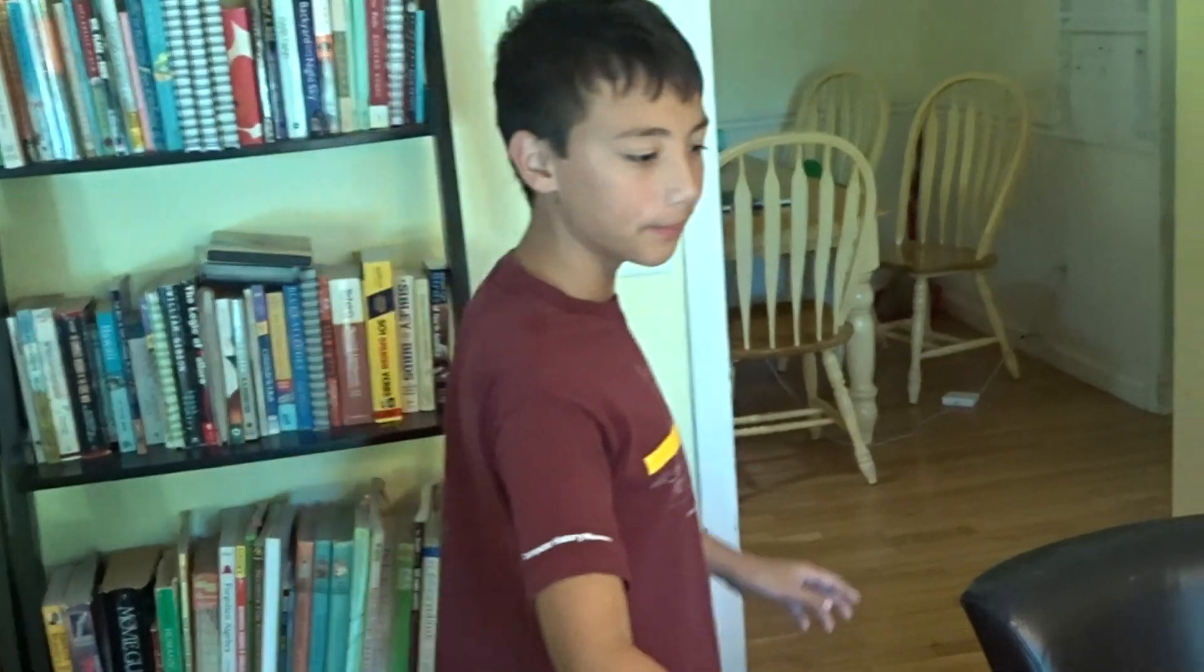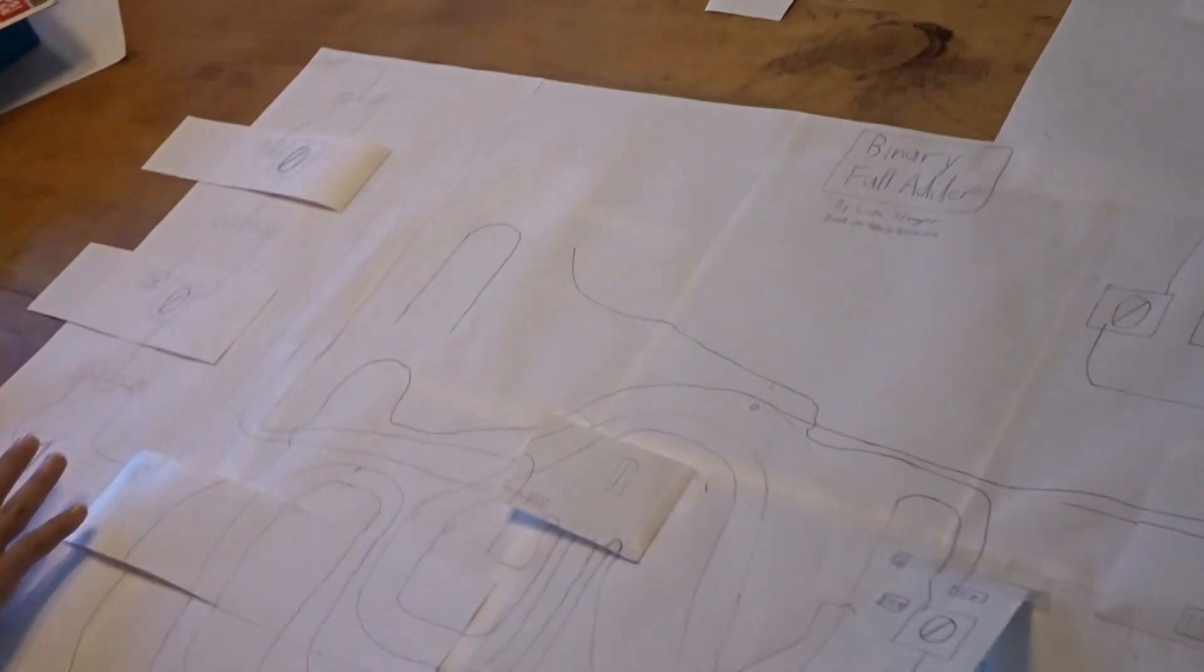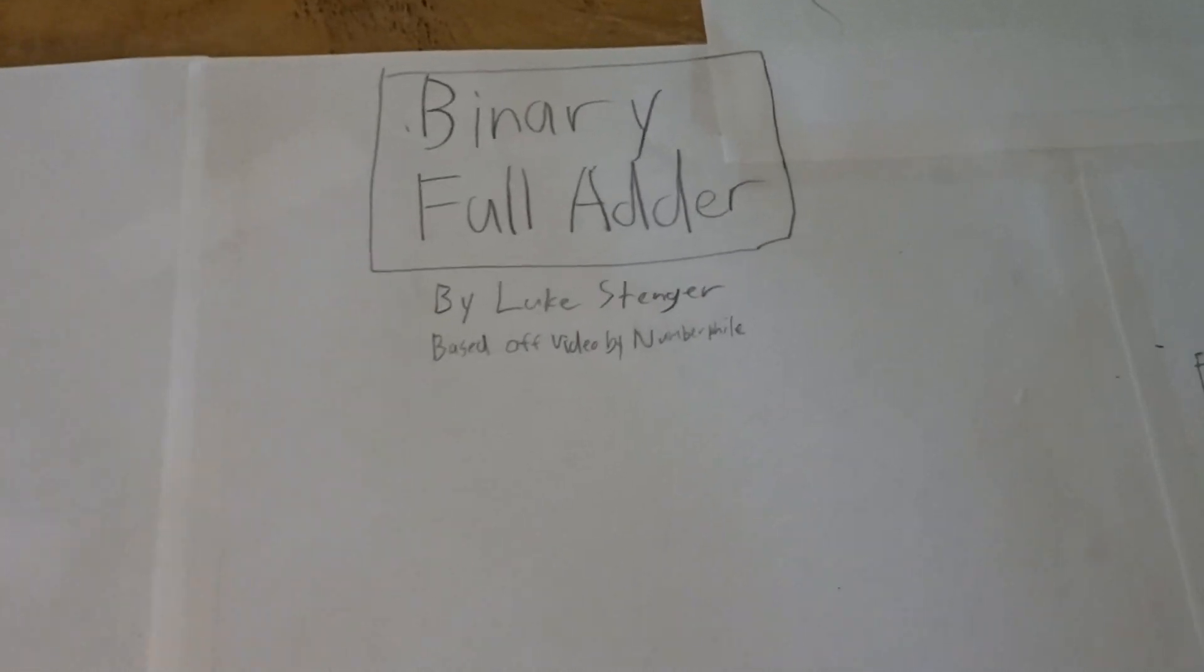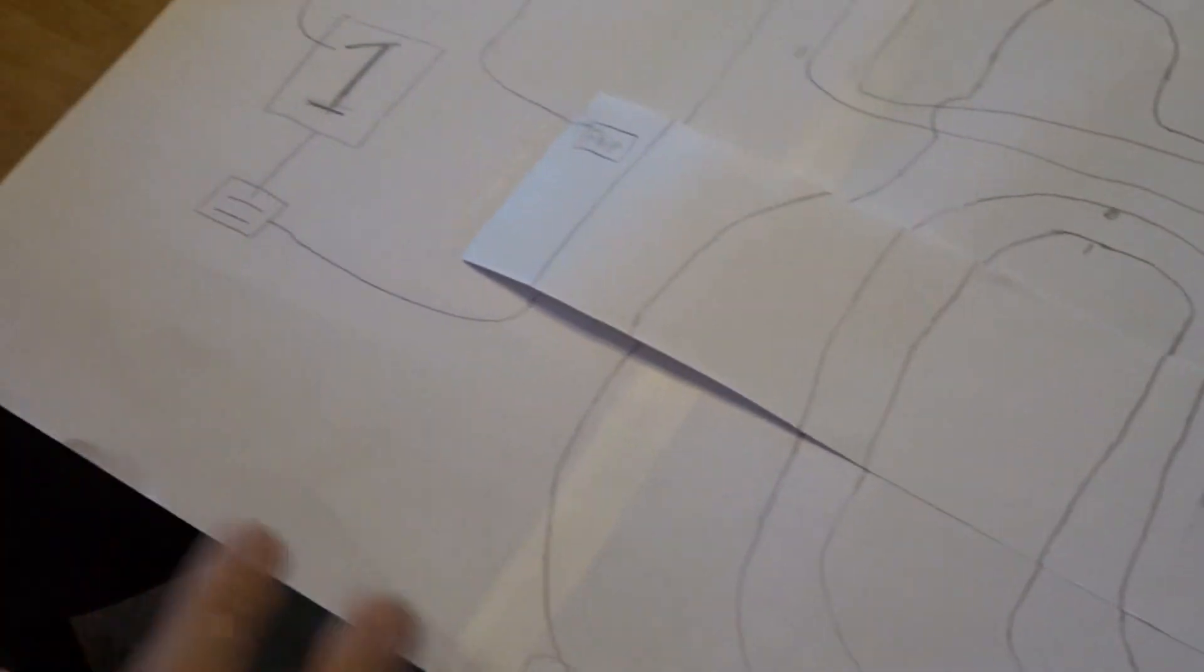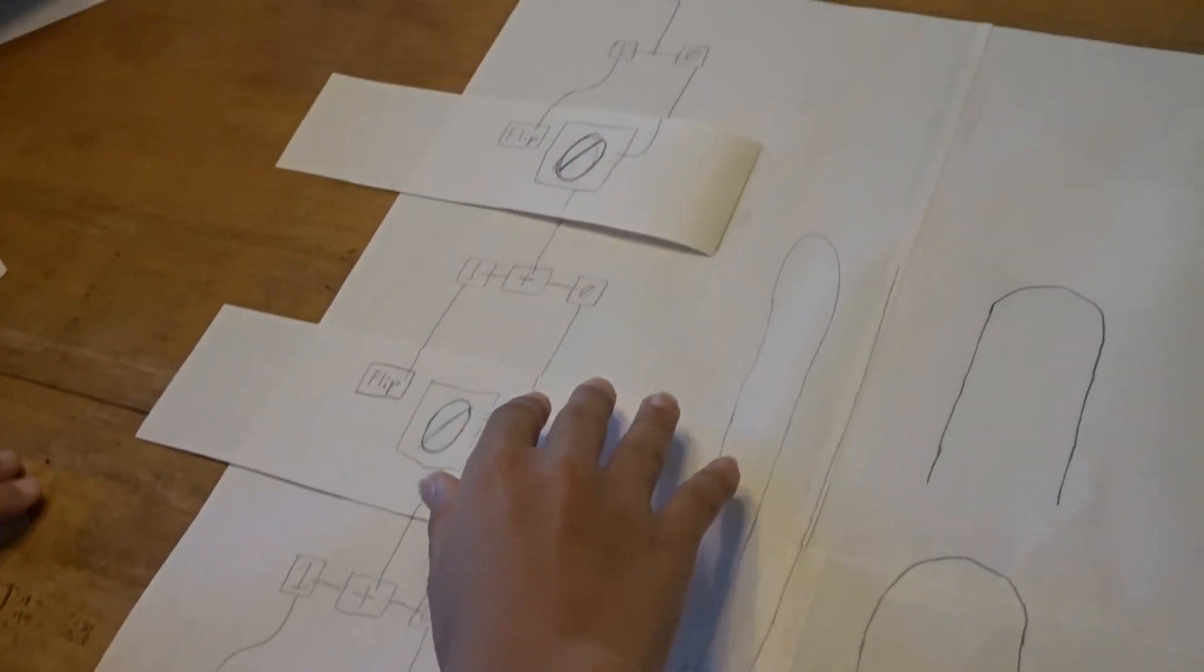I was inspired by that video to make a full adder, which does the same thing as the half adder except it can add 3 numbers. And this is useful because if you want to add numbers bigger than just 0 and 1, you have to have a carry in from the last place, so you can use it.